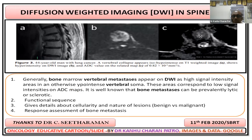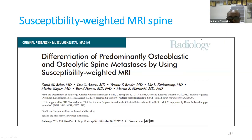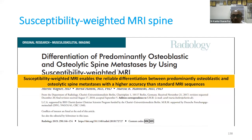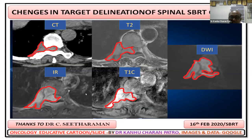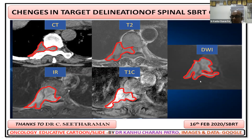Volume changes significantly with different sequences. On CT, the lesion may appear smaller; T1 contrast, T2, and IR sequence each show progressively larger volumes. Adding fused diffusion-weighted imaging can show a volume even double that of CT. This demonstrates the critical importance of MRI sequence selection for accurate treatment planning.